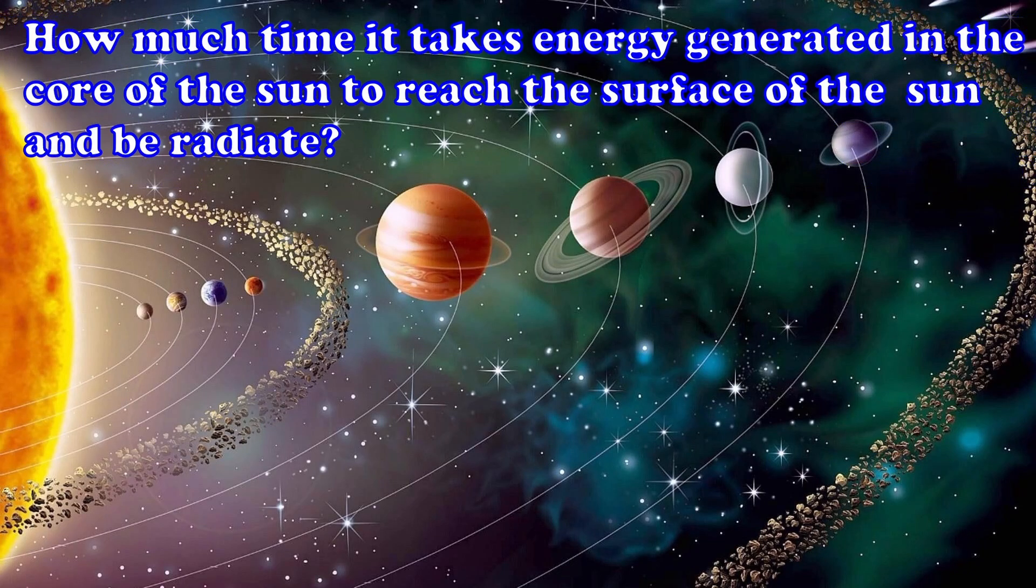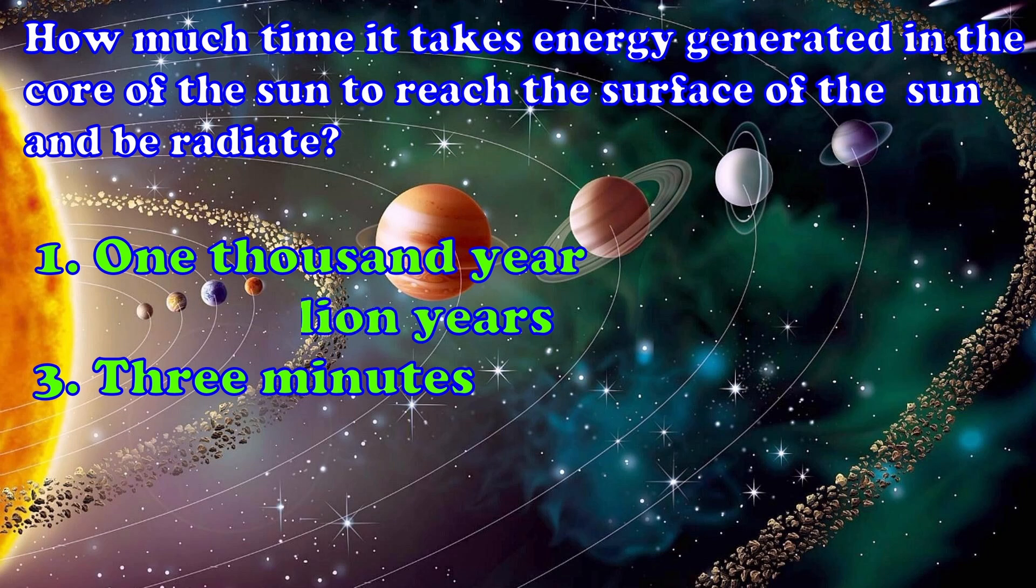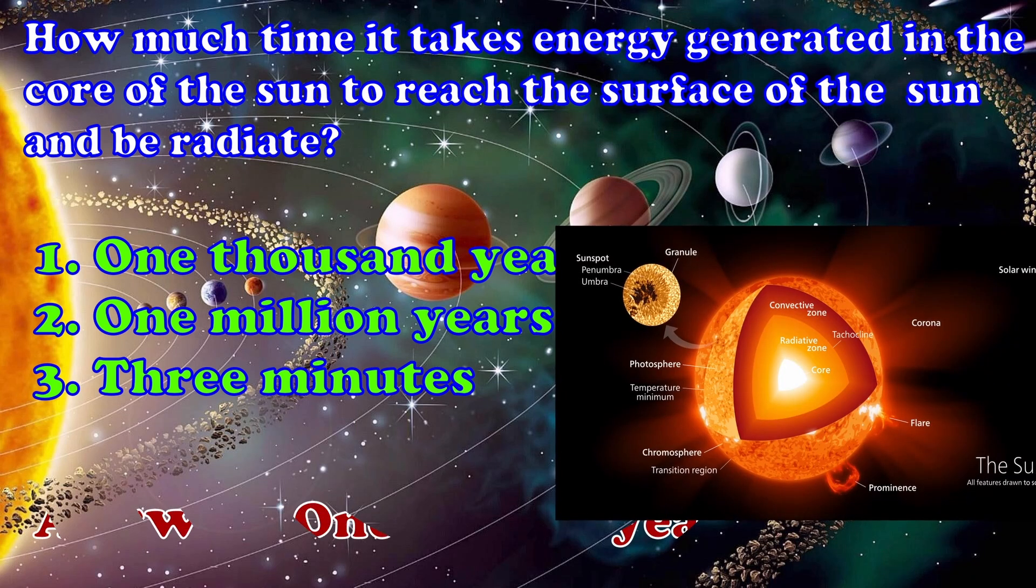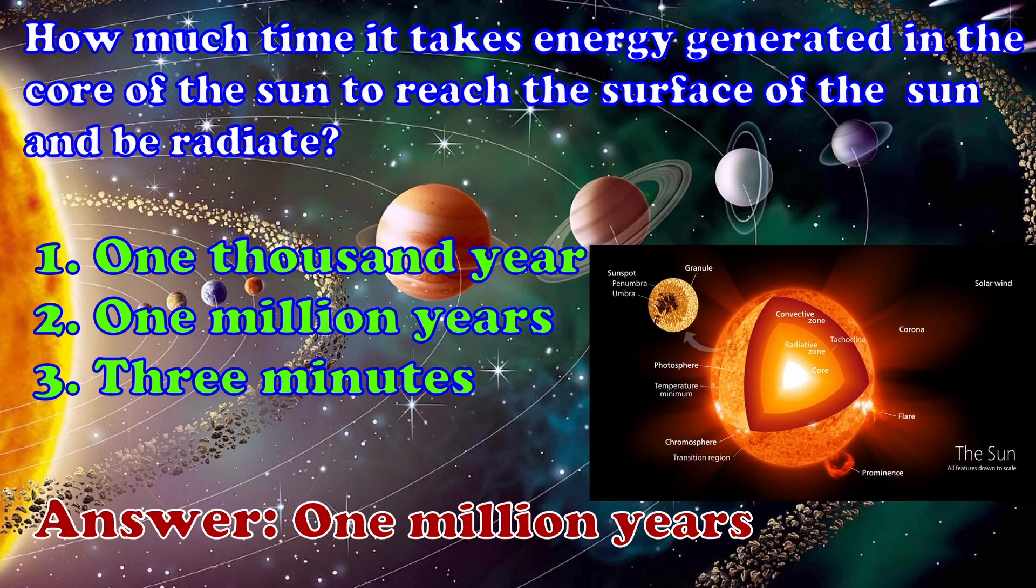How much time it takes energy generated in the core of the Sun to reach the surface of the Sun and be radiate? 1. 1000 year 2. 1 million years 3. Three minutes. Answer, 1 million years.